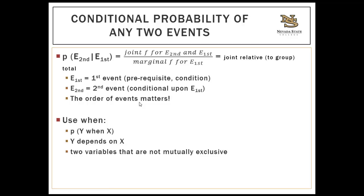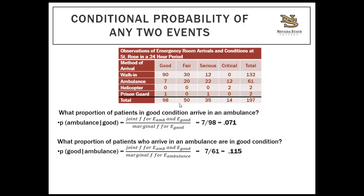E-first is the prerequisite or condition — the first event. E-second is the second event that happened after the first. It's conditional upon the first event, and the order of events matters. The 'when' condition falls after the dividing line in the formula. For example: what's the probability the next ER patient will come in an ambulance when they are in good condition? The prerequisite is that they are in good condition — we're only interested in patients who are in good condition.